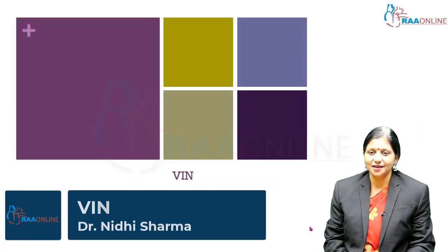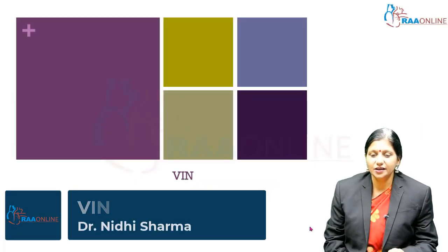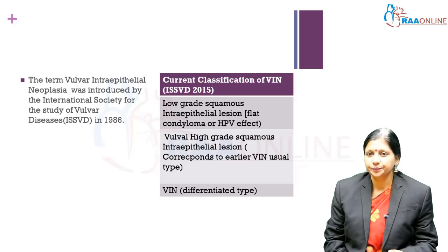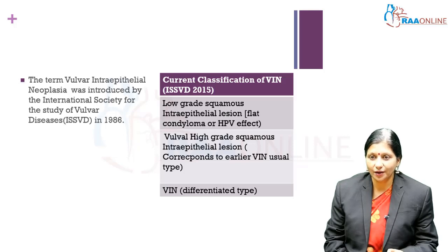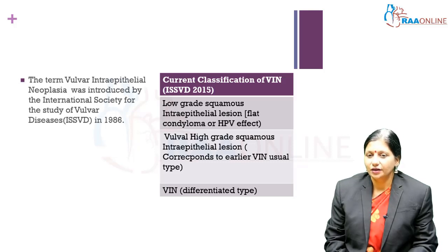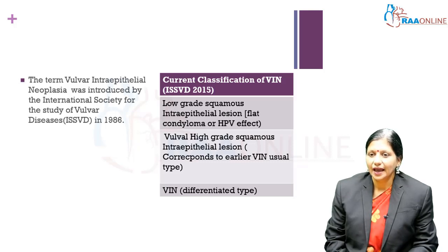Welcome to RAW Online. Today's topic is vulvar intraepithelial neoplasia. The term was introduced by the International Society for the Study of Vulvar Diseases in 1986. The classification categorizes vulvar intraepithelial neoplasia into three types: low grade squamous intraepithelial lesions (LGSIL, type 1), vulvar high grade squamous intraepithelial lesions (HSIL, type 2), and a third variety called VIN differentiated type.